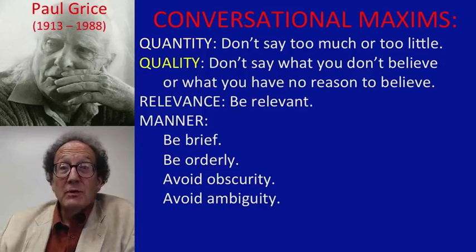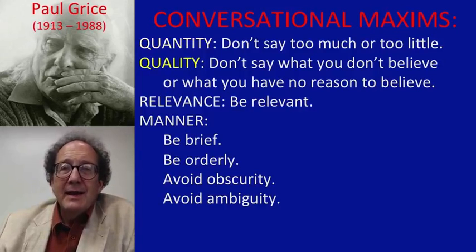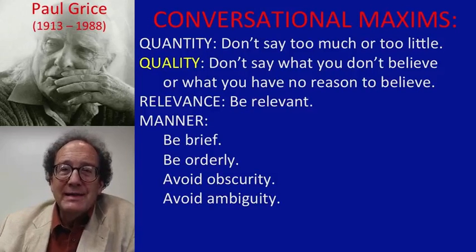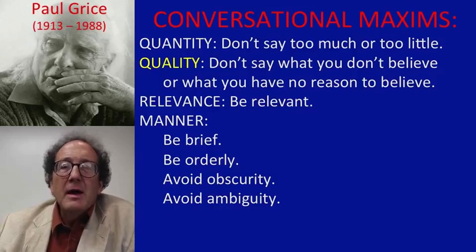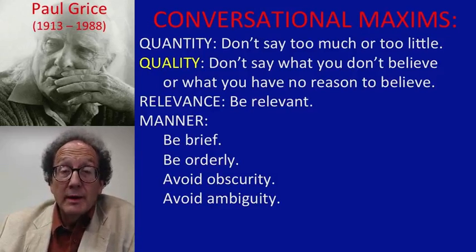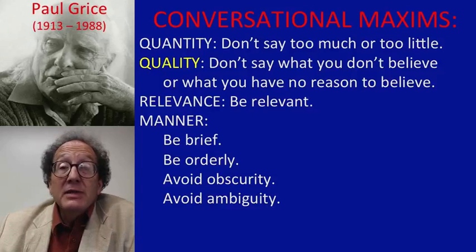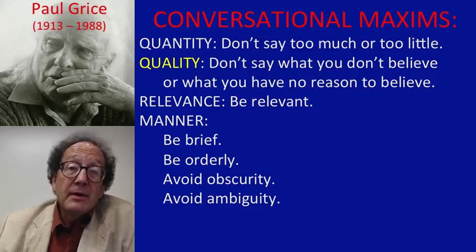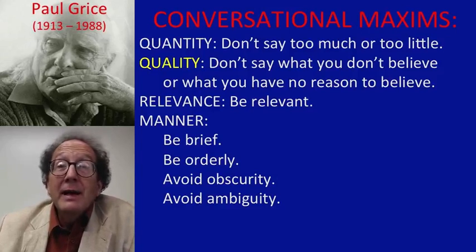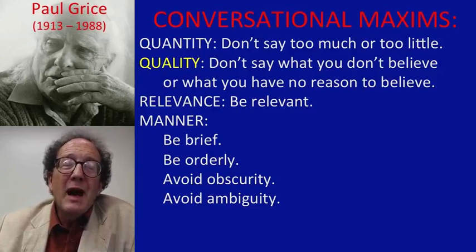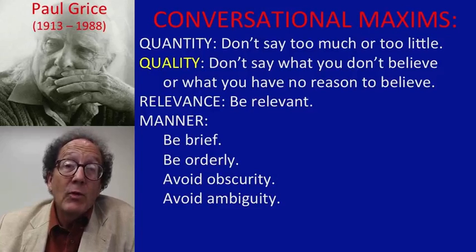The second rule is the rule of quality. The rule of quality says: don't say what you don't believe to be true. Don't lie. Don't mislead. Don't deceive. But also — this is the second part of the rule of quality — don't say something that you lack adequate justification for, because you shouldn't just be talking off the top of your head with no reason to believe what you're saying. These are all pretty common sense rules, but they weren't apparent to people until Grice formulated them.